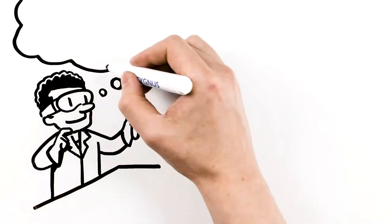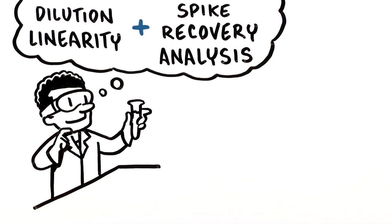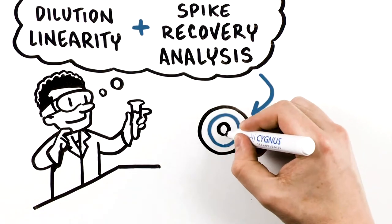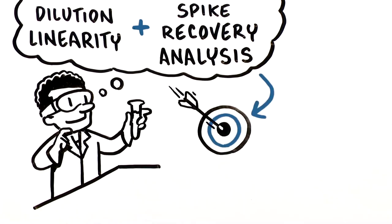Together, dilution linearity and spike recovery ultimately help determine whether your HCP ELISA is fit for purpose of process monitoring and product lot release.